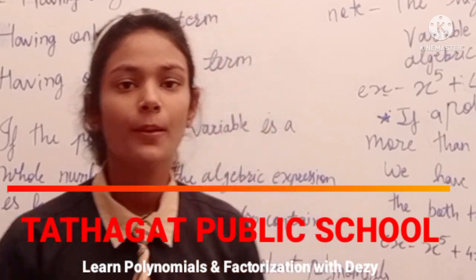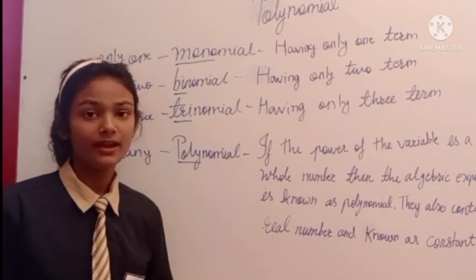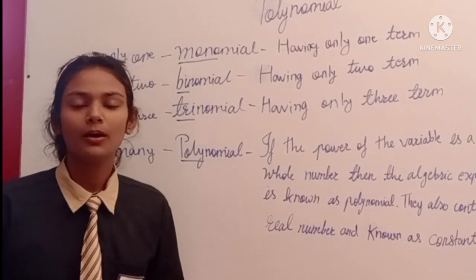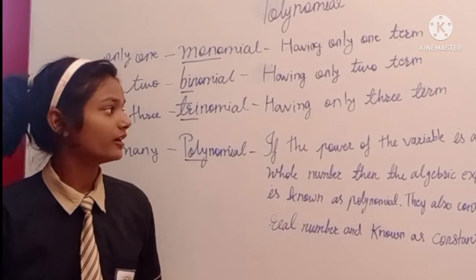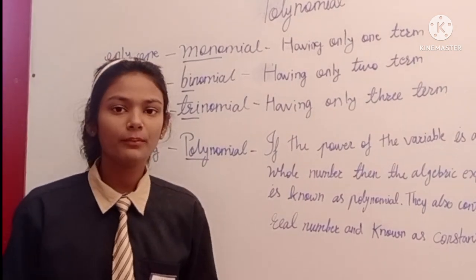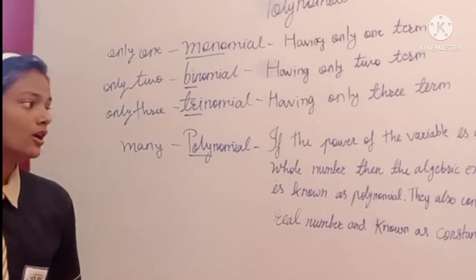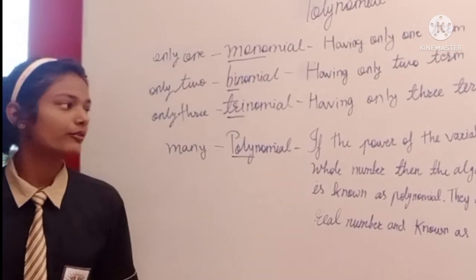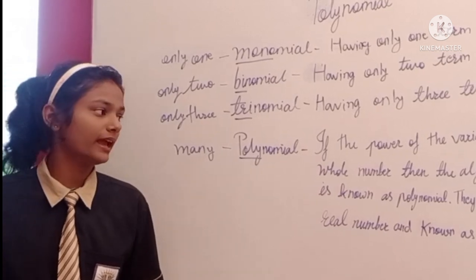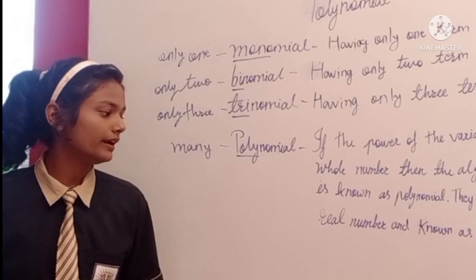Mono means one — a polynomial having only one term. Bi means two — a polynomial having only two terms. Tri means three — a polynomial having only three terms. Poly means many. A polynomial is an algebraic expression where the power of the variable is a whole number. They also contain real numbers and are known as constants.